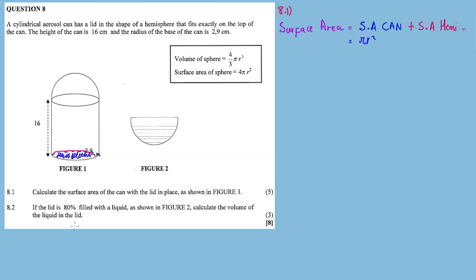There's the area for the circle at the bottom, which is πr², and then the area all along the side around the cylinder, which is 2πr times the height.